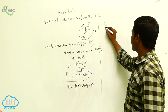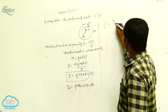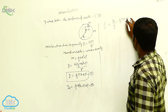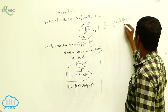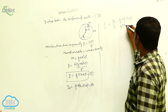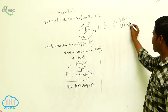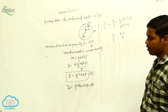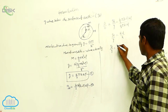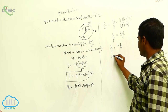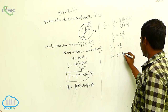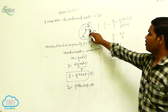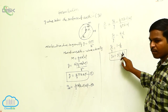Dividing equation 2 by equation 1, we get g_d over g equals (4/3)π(r minus d)G rho divided by (4/3)πrG rho. These terms all cancel, giving g_d over g equals 1 minus d/r. That is, g_d equals g times (1 minus d/r). This is the acceleration due to gravity at depth d below the surface of the earth.